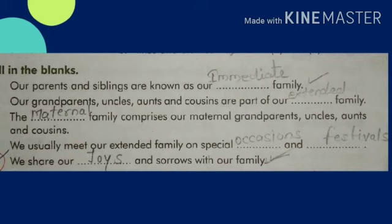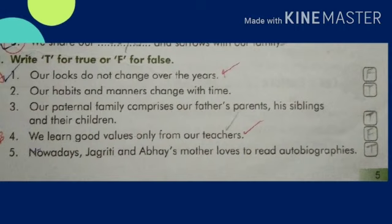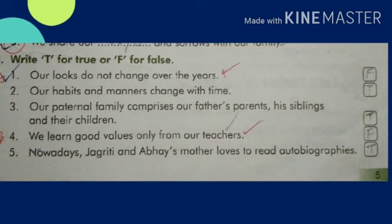Third section — write True or False. First, our look does not change over the years — False. Second, our habits and manners change with time — True. Third, our paternal family comprises our father's parents, his siblings and their children — True. Fourth, we learn good values only from our teachers — False. Five, nowadays Jagrati and Abhay's mother loves to read autobiographies — True.